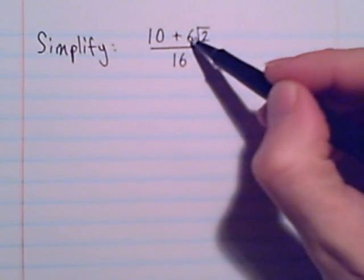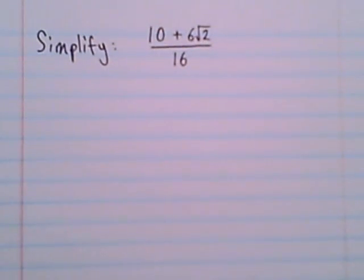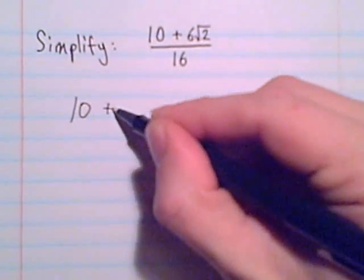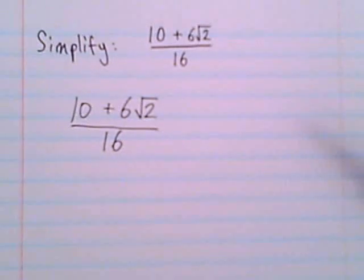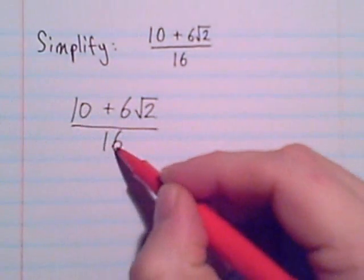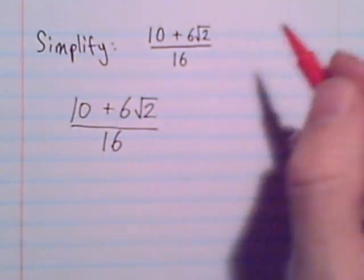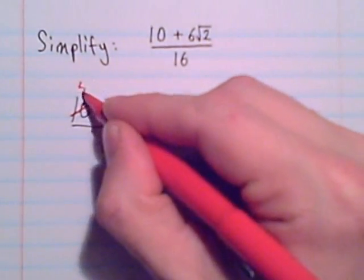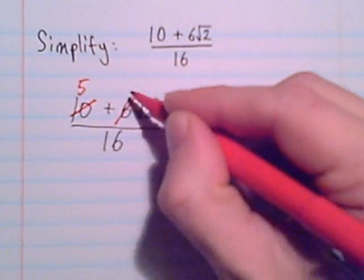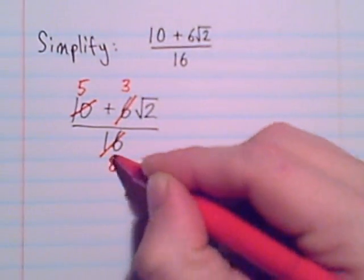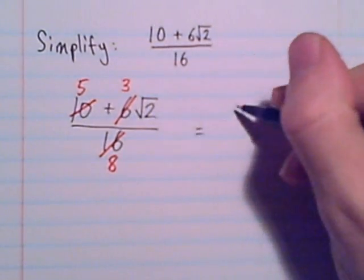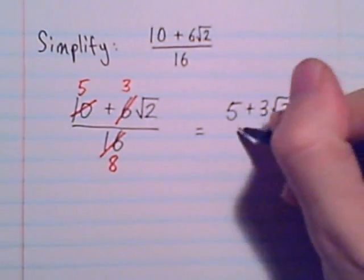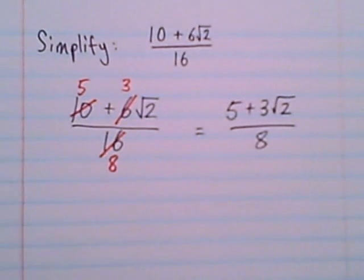There are two ways to think about it. The first way is where I say to myself, 'Yeah, I can simplify this fraction because I could divide these three numbers all by two.' So I can divide that by two and get 5, divide that by two and get 3, and so on. That's how I would simplify this fraction: equals (5 + 3√2)/8.